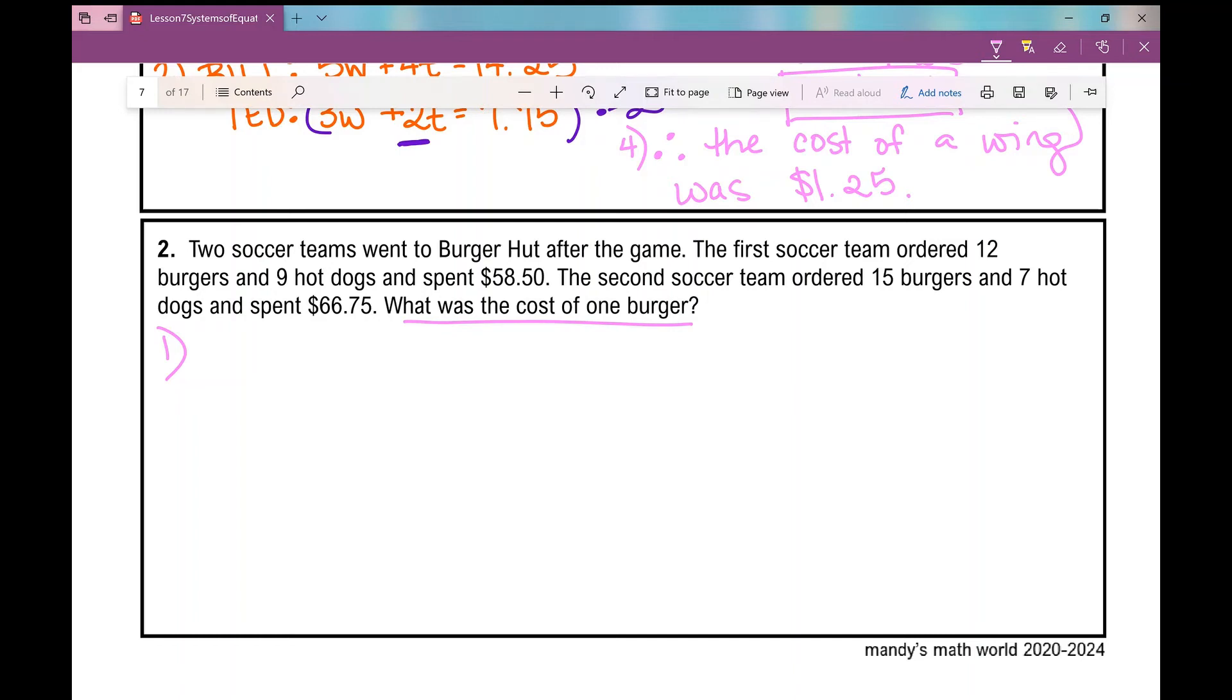So let's first write our variables, identify our variables. We're looking for the cost of one burger. Well then let's just let B equal burger. Again, you can always do X and Y, solve for Y, graph it, find your point of intersection. We're solving it this way. H, hot dog. We're looking for the cost.